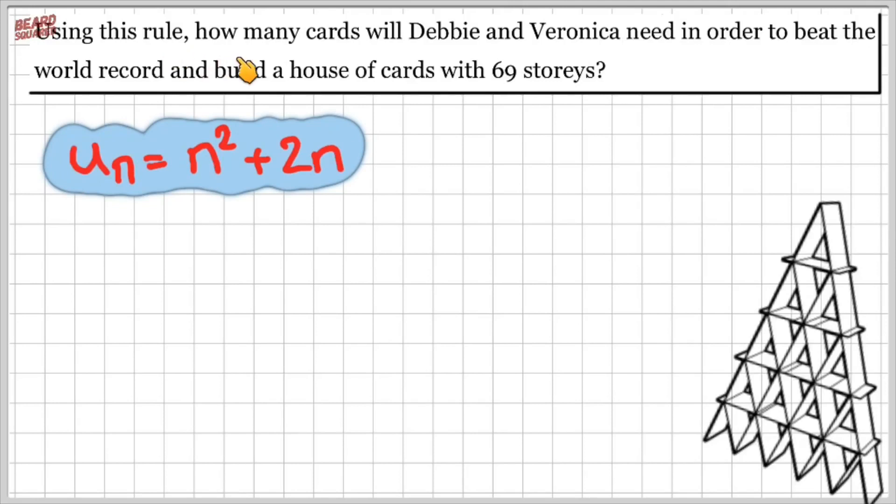So using this rule, how many cards will Debbie and Veronica need in order to beat the world record and build a house of cards with 69 stories? So we're trying to find out how many cards they need when they build a house of cards of 69 stories. All we're going to do is substitute the value of 69 for n.